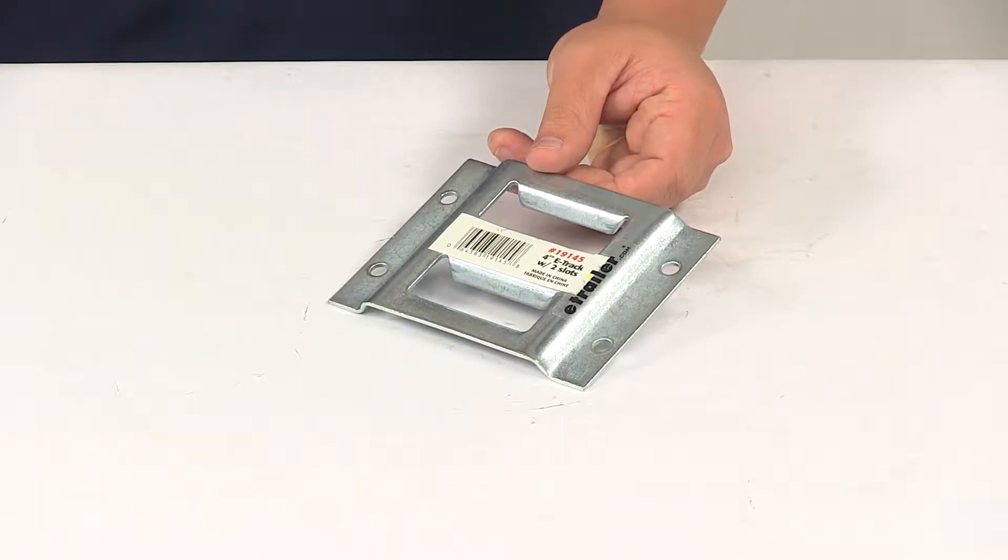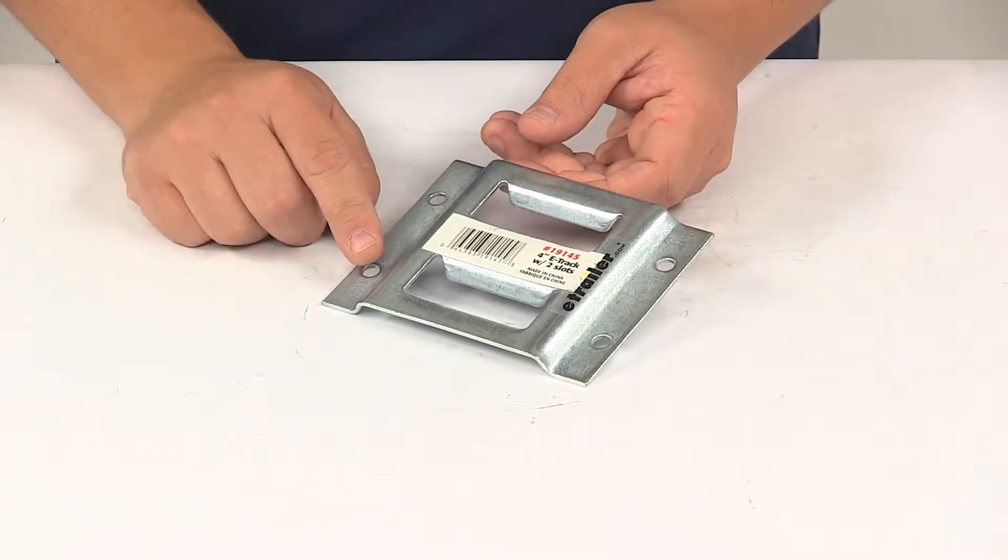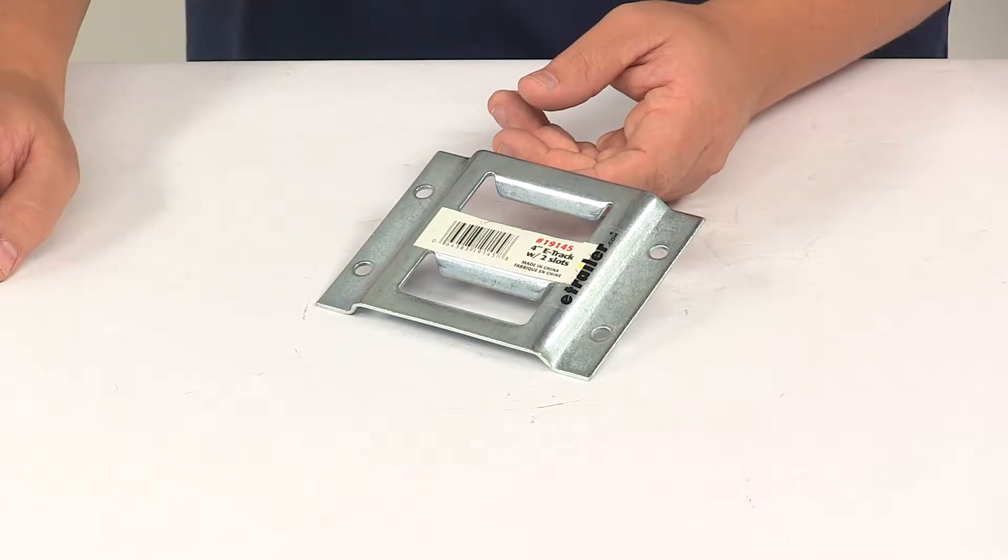Today we're taking a look at the Ericsson two-slot horizontal e-track. This e-track provides tie-down points for securing cargo in your truck bed, your trailer, or your van.